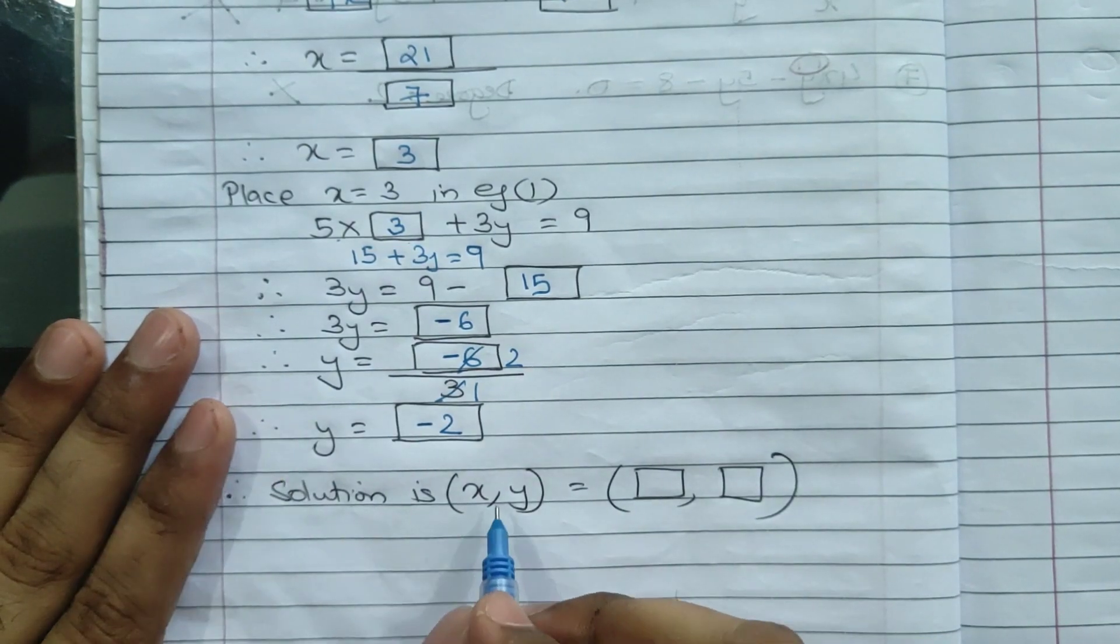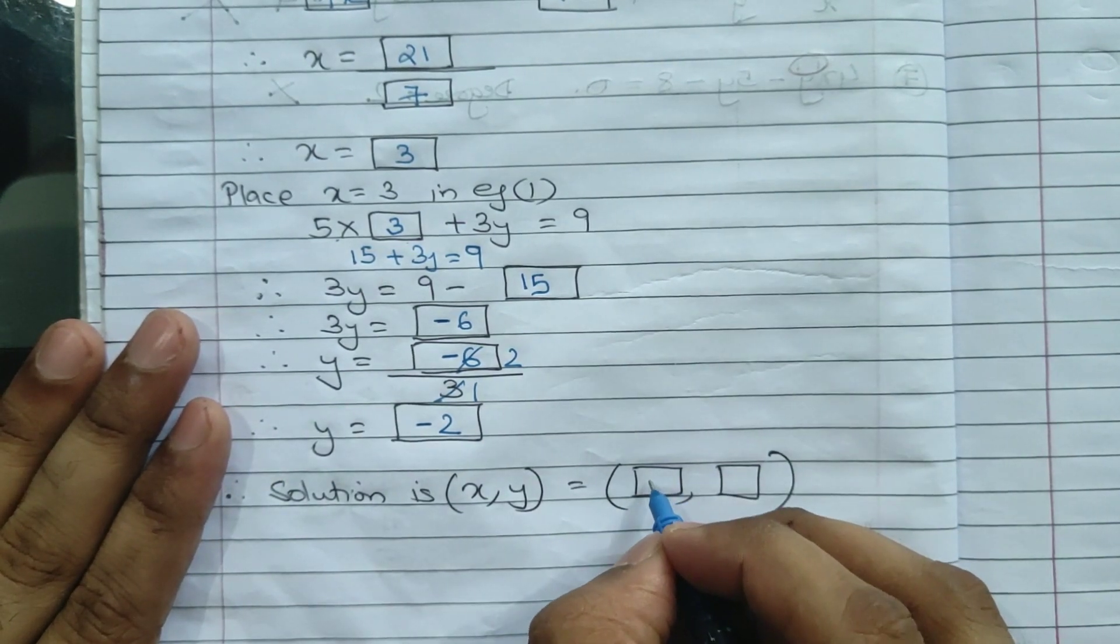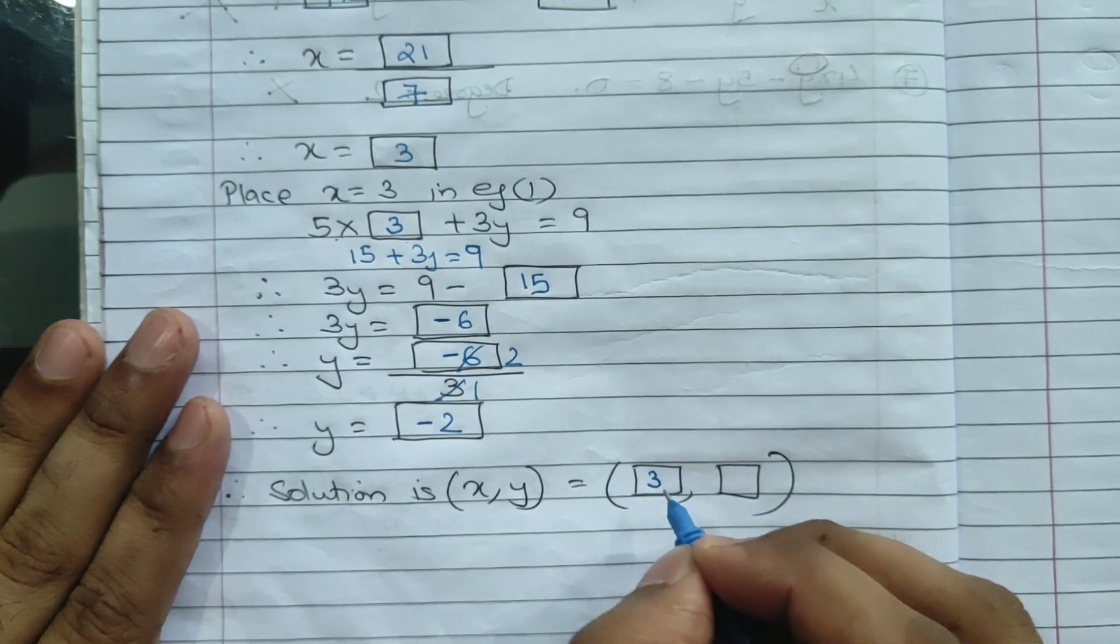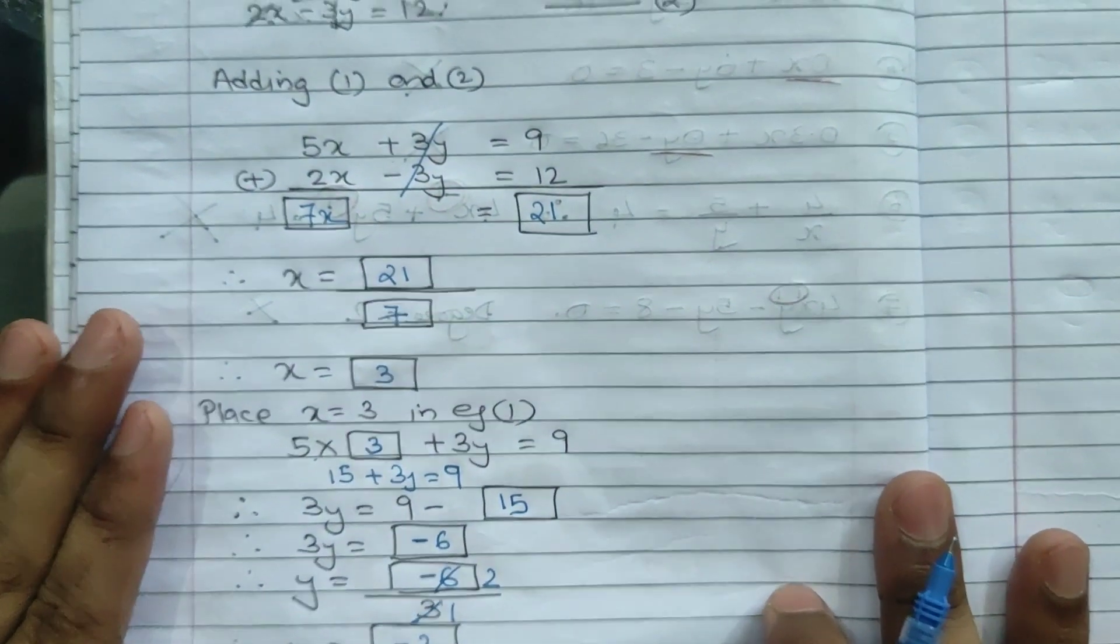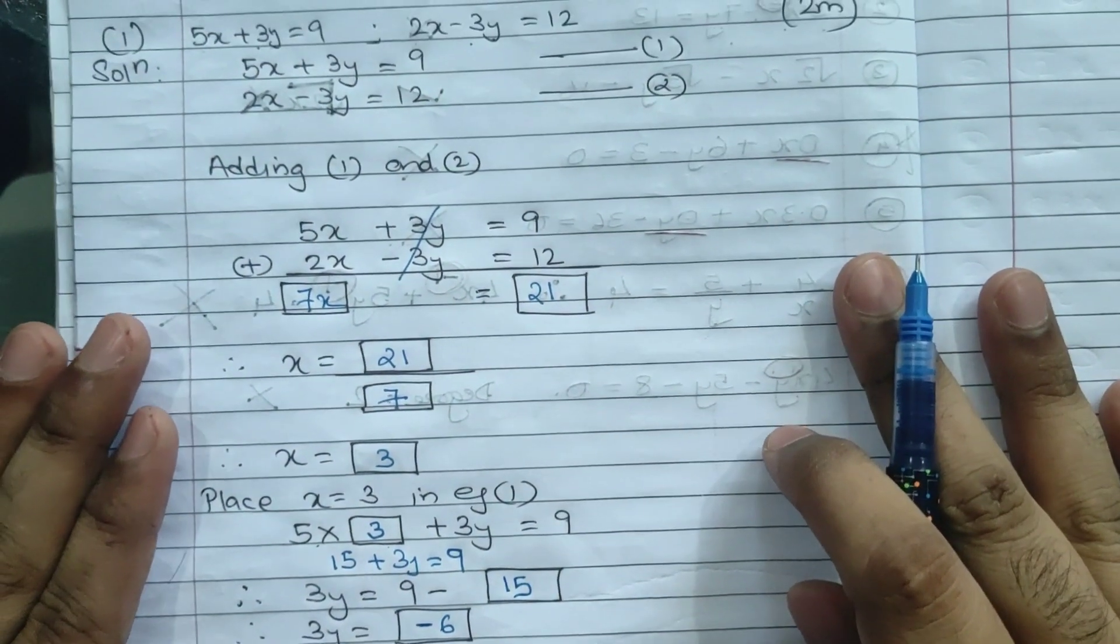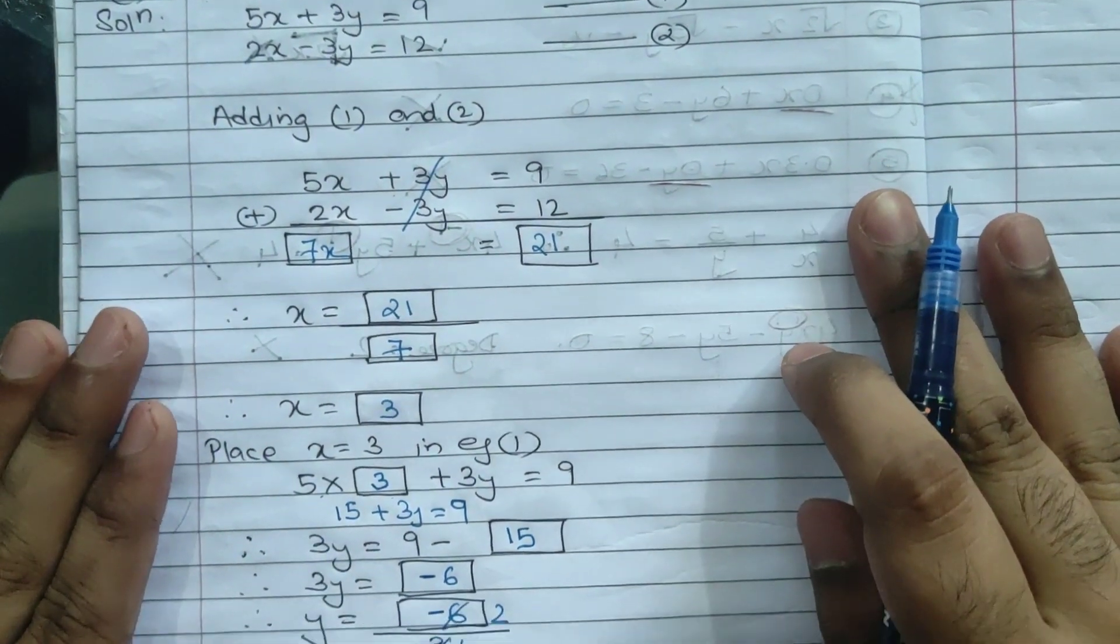So last step - the solution is x, y equals first x value that is 3, and next y value that is minus 2. Just like this you will get the whole 2 to 3 marks depending upon the weightage in your board examination.